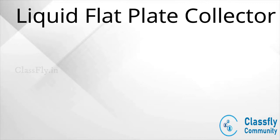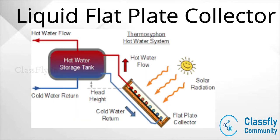The cold water stored in the overhead tank flows through the water tubes. Solar radiations pass through the transparent cover and fall on the absorber plate, and this heat is transferred to the cold water flowing through the tubes. Heated water, being lighter than cold water, rises to the top of the solar tank and is carried out by pipelines for various applications. Cold water from the overhead tank again enters the water tube and the process repeats.